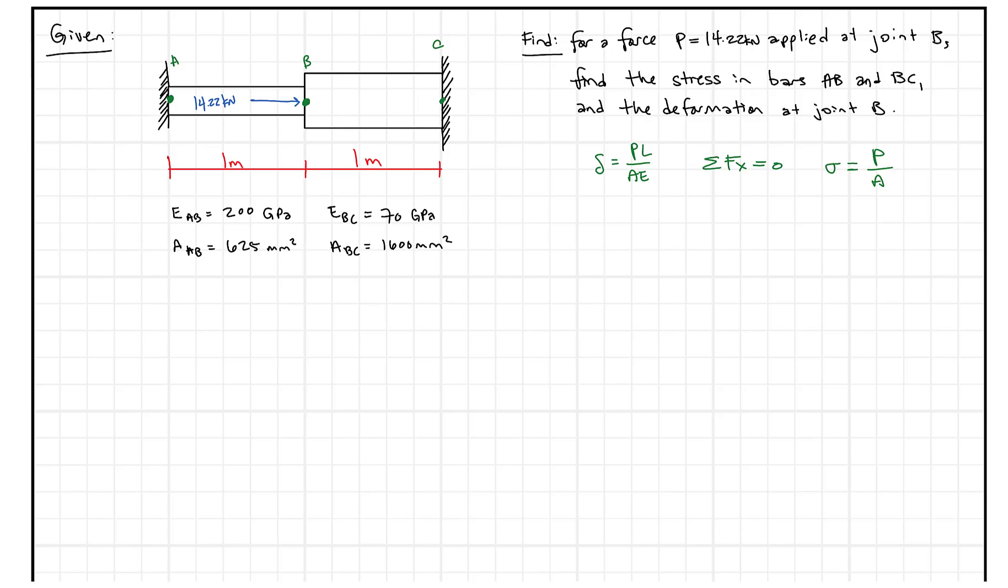Alright, so in this question, what we're given is a composite bar with two different materials. One has a modulus of elasticity of 200 GPa, one has a modulus of elasticity of 70 GPa, different areas, but they're constrained between supports A and C.